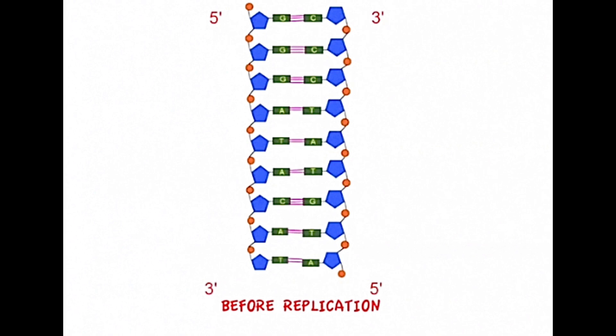To understand how DNA replication takes place we first need to remind ourselves of the structure of DNA with regards to the prime ends as shown here. DNA is double-stranded and notice that the right-hand strand is anti-parallel to the left-hand strand.